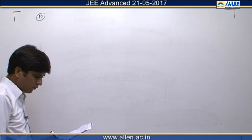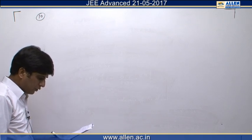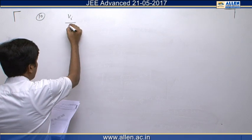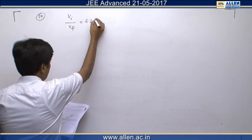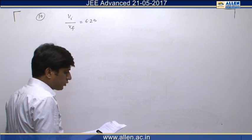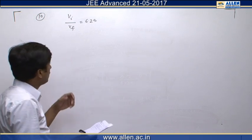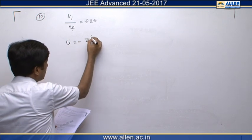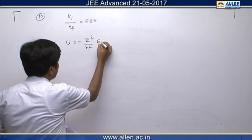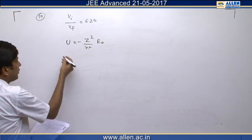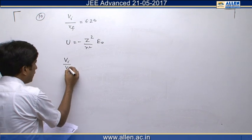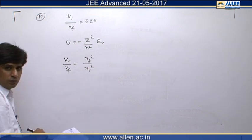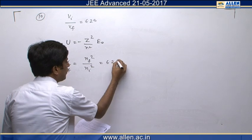In question number 10, we are given the ratio of potential energy of an electron in two different orbits: v_initial upon v_final equals 6.25. We are asked to find the smallest possible value of n_final, the final quantum number. The potential energy in any orbit is given by U equals minus Z² by n² times e₀. Therefore v_initial by v_final equals n_final² upon n_initial², which equals 6.25 according to the question.